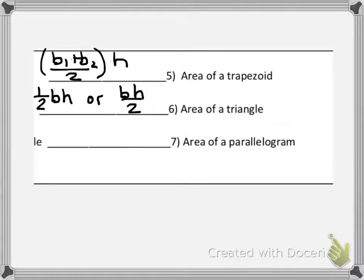The last one here, number 7, the area of a parallelogram is base times the height, or bh.